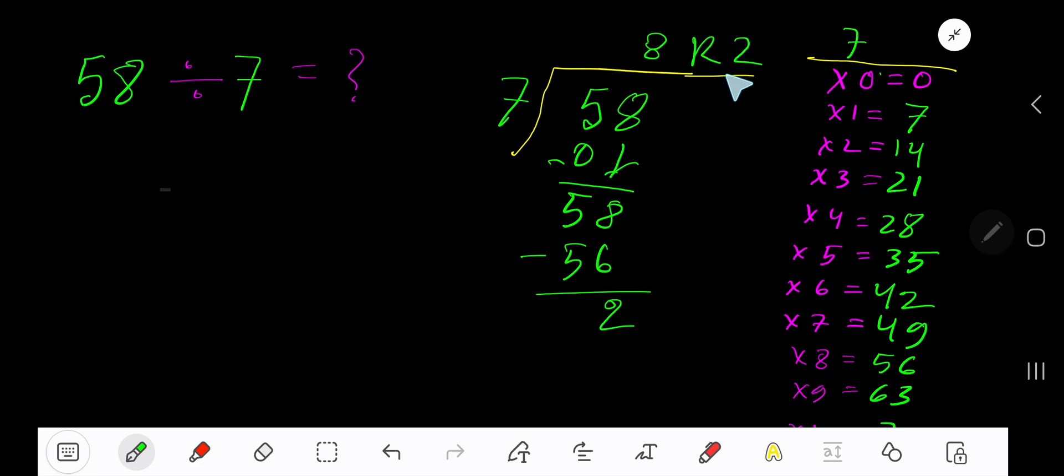If you want to write your answer in decimal form, then add zeros. Bring down the first zero. Before the zero there's a decimal. The decimal must come to the quotient directly. 7 goes into 20 how many times?